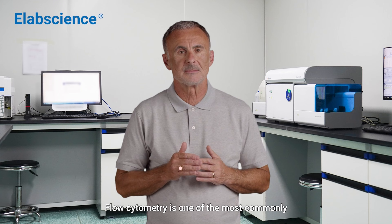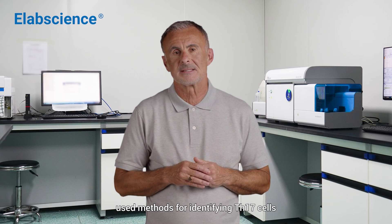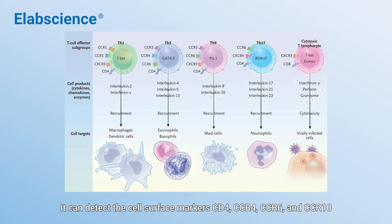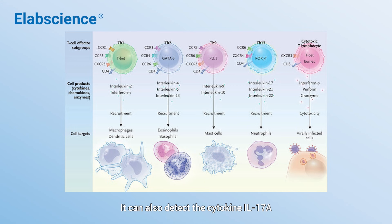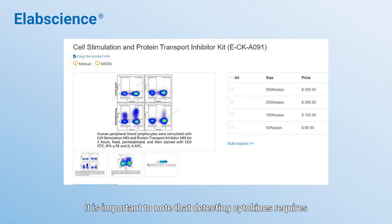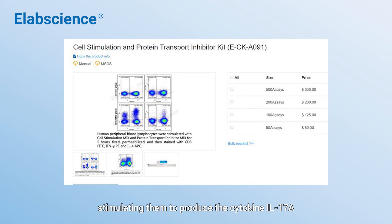Flow cytometry is one of the most commonly used methods for identifying TH17 cells. It can detect the cell surface markers CD4, CCR4, CCR6, and CCR10, as well as the cytokine IL-17A, or identify TH17 cells through the nuclear marker RORγt. It is important to note that detecting cytokines requires using a stimulation blocker to culture the cells for a period of time, stimulating them to produce the cytokine IL-17A.